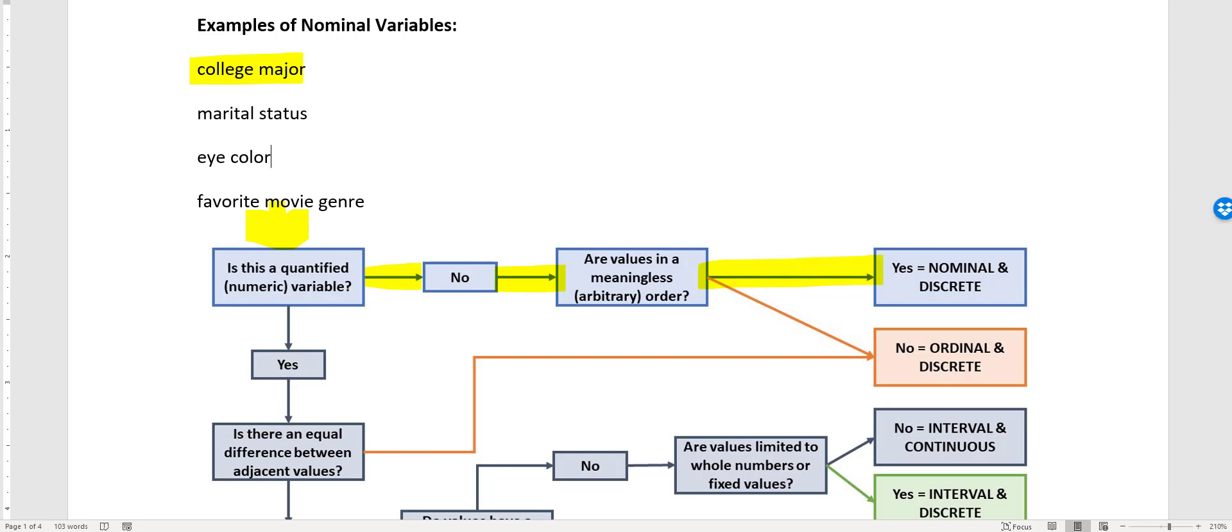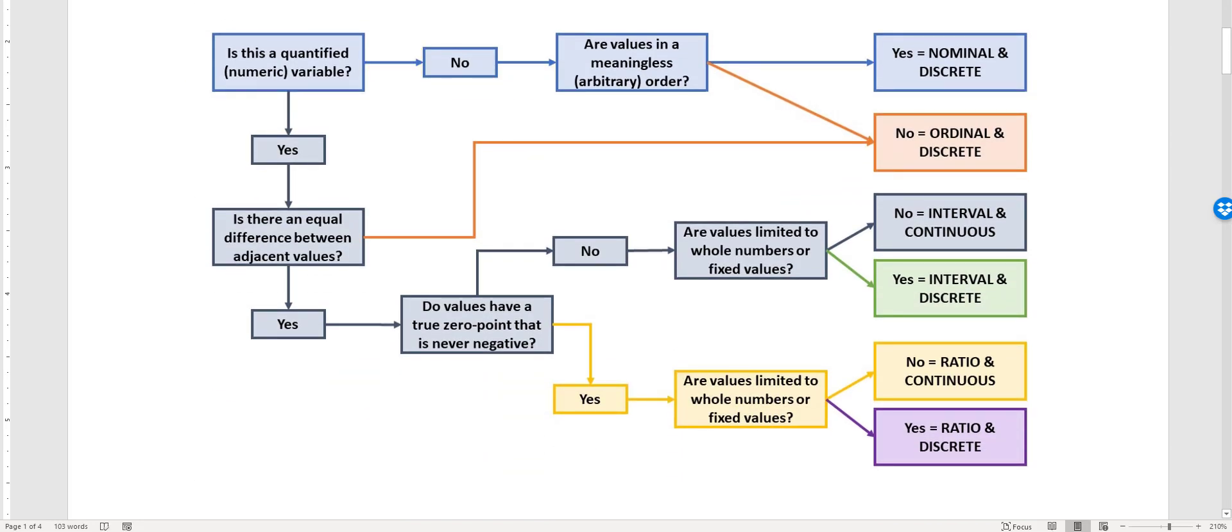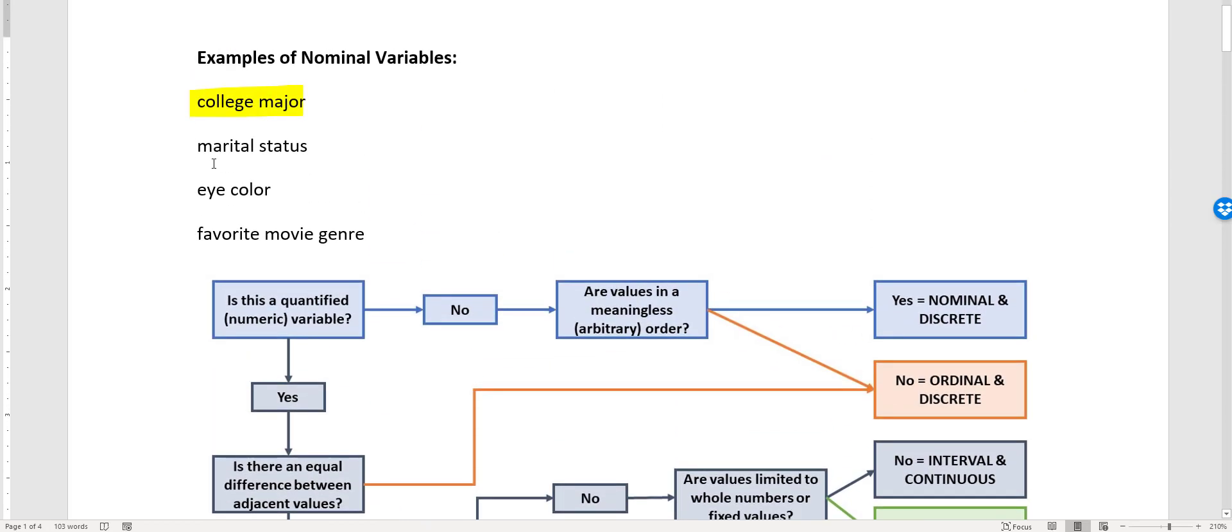Let's see if we follow this same path if we look at a different variable, if we look at marital status. Marital status: single, divorced, married, right? Not quantified, not numeric. If you put them in order, you might think that single people are the coolest or whatever, but it's arbitrary, right? It's meaningless. Again, nominal.